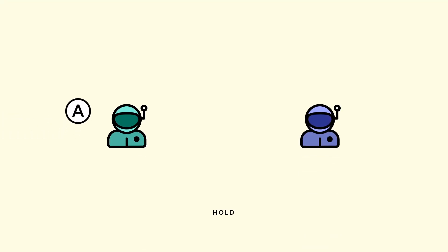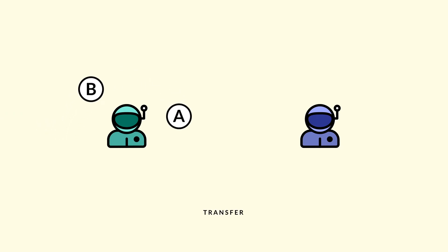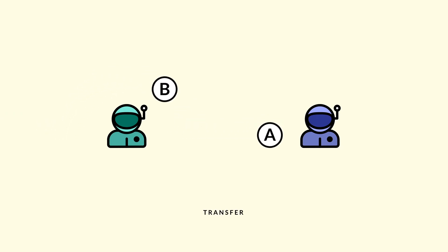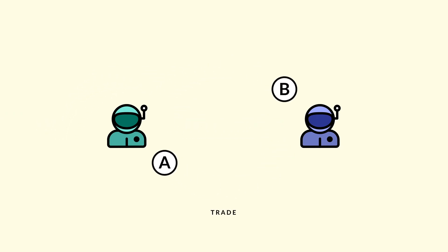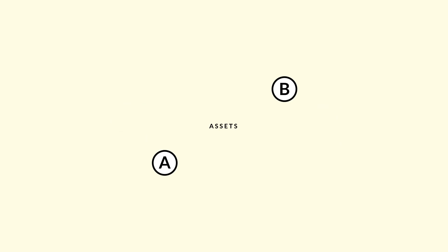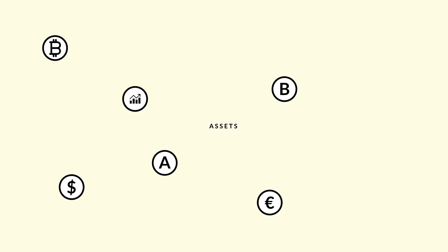The Stellar Network can be used to hold, transfer, and trade any type of asset: dollars, euros, bitcoin, stocks, gold, ICO tokens, and more.